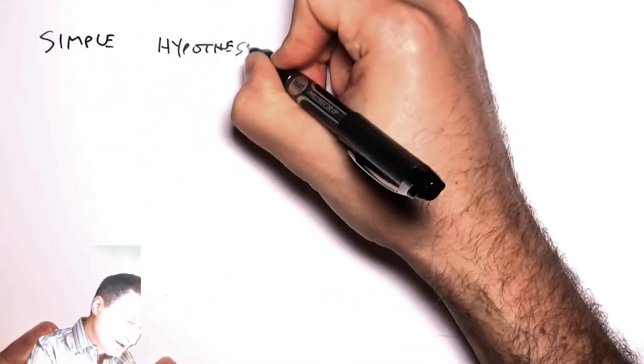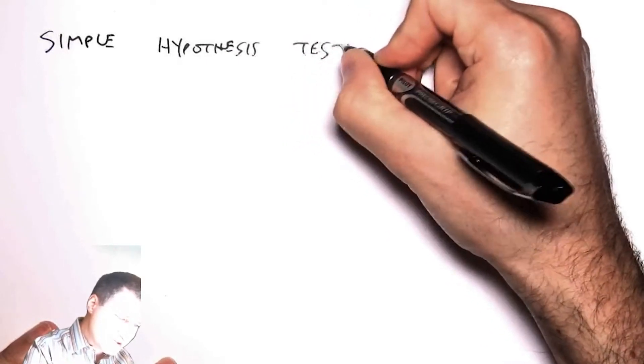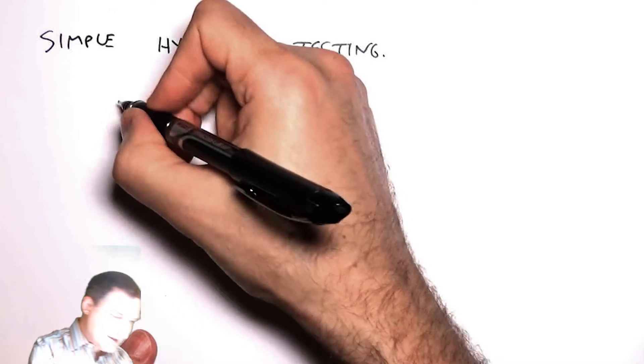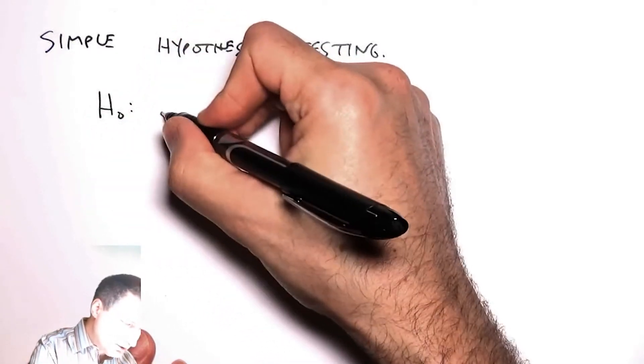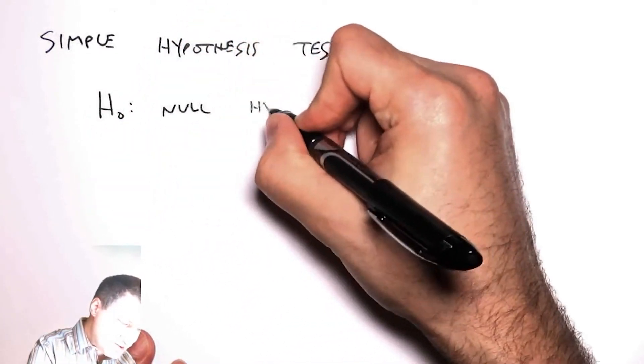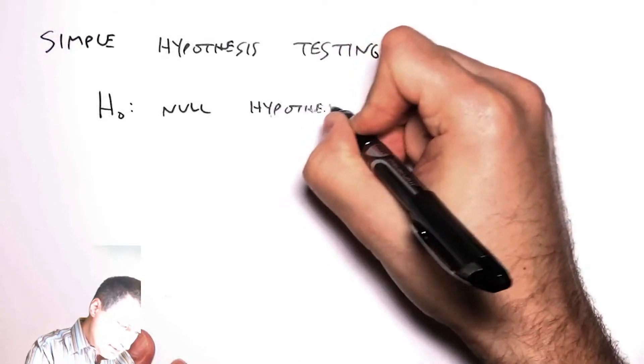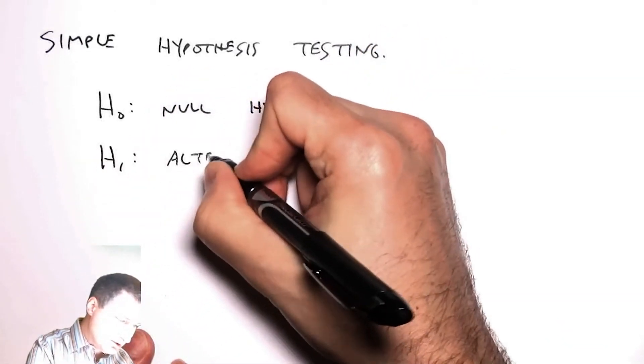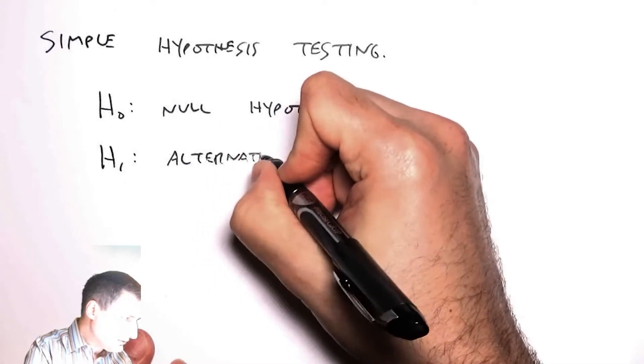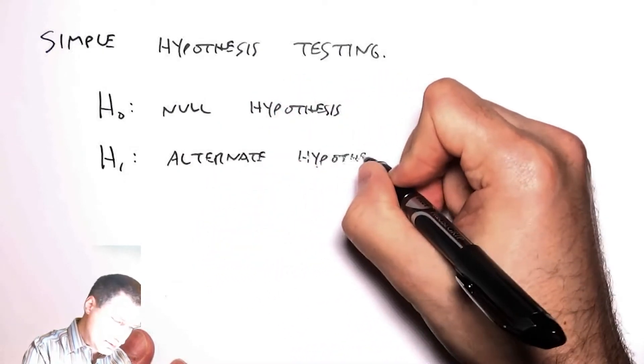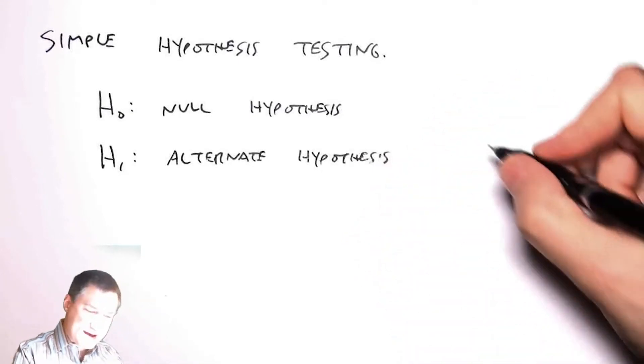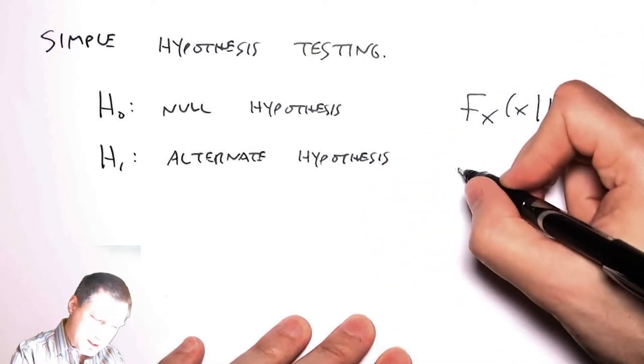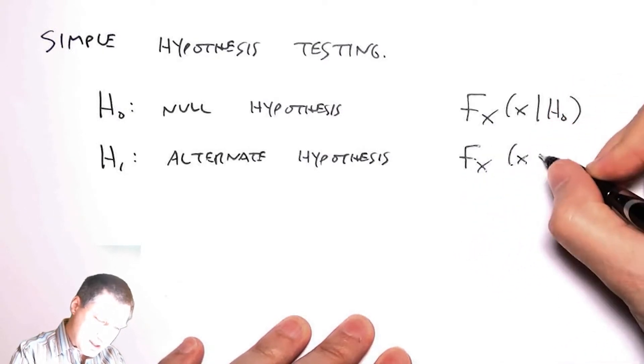And honestly, we already talked about this a little bit in different contexts already, so some of this stuff is going to look familiar. But basically now the setup is I have H0, which I call the null hypothesis, and I have a new hypothesis, H1, which I'm going to call the alternate hypothesis. And what I have in each case is a PDF of how the random variable should look under each of these hypotheses.